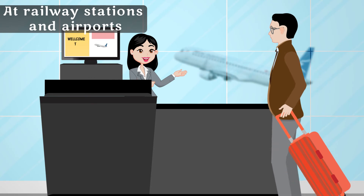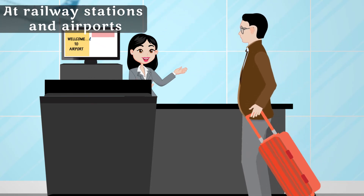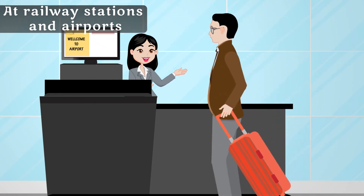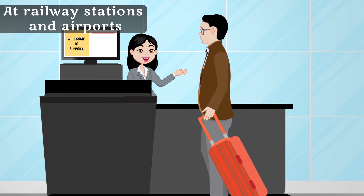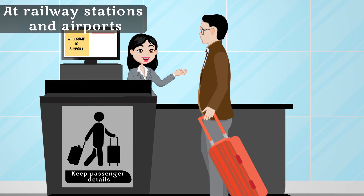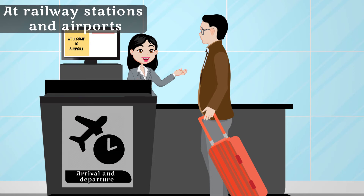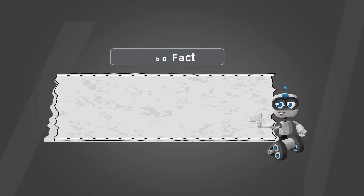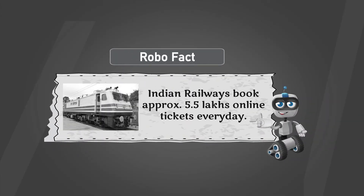At railway stations and airports, computers help book and cancel tickets, store passenger details, and track arrival and departure of trains and airplanes. Robo fact: Indian Railways books approximately 5.5 lakh tickets online.